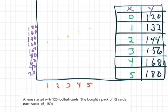So, our table is over on the right. At zero weeks, right here, she'd have 120 cards. At one week, she'd have 132. Two weeks, 144. Three weeks, 156. Four, 168. Five, 180. And we could actually connect this. It's not super straight, but it would make our linear equation true.